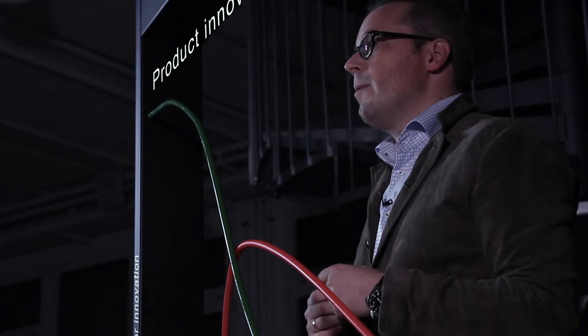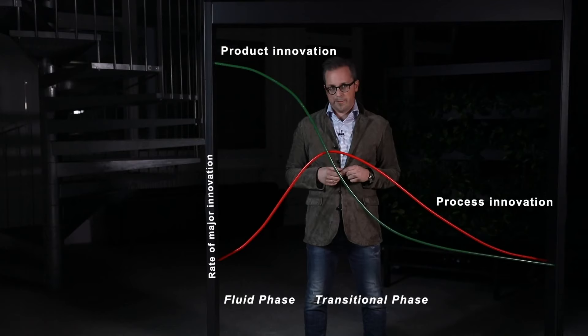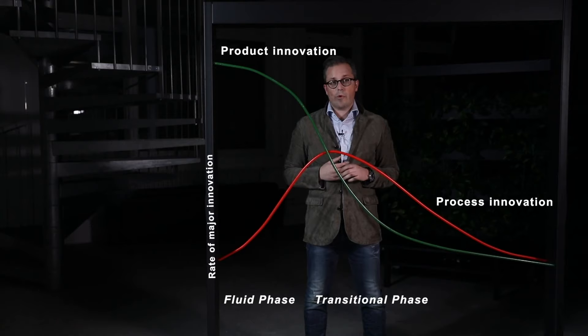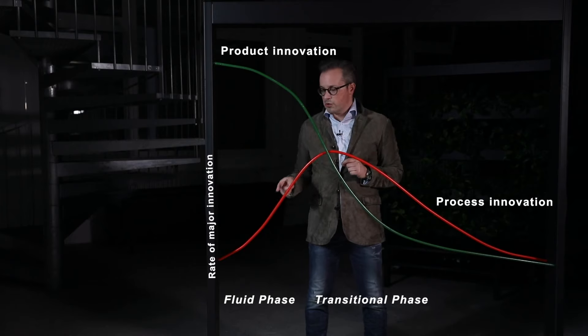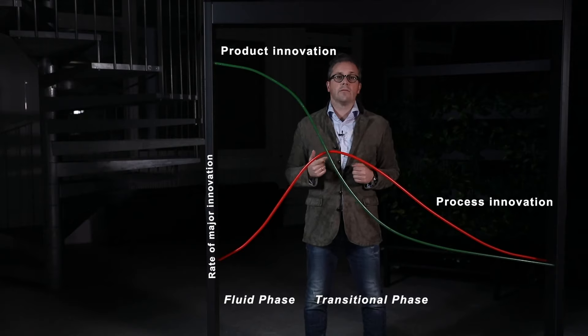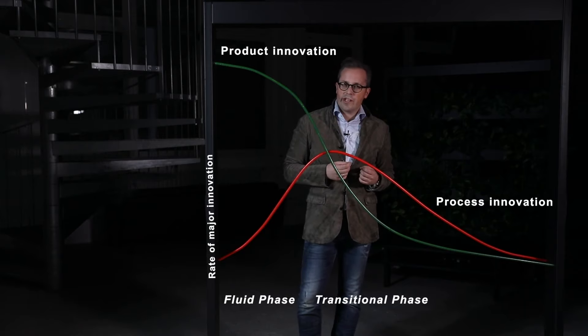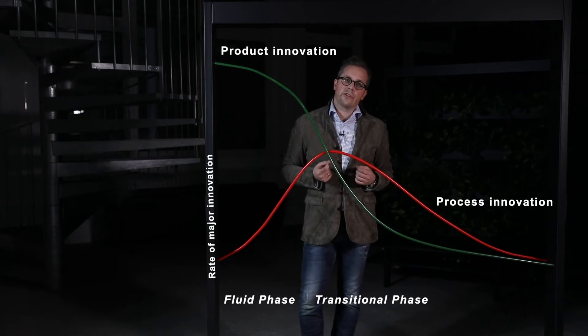A dominant design radically reduces the number of performance requirements to be met by a product by making many of those requirements implicit in the design itself. Hence, as the form of the product rapidly becomes settled, the pace of innovation in the way it's produced quickens. Competition begins to take place on the basis of cost and scale as well as product performance.